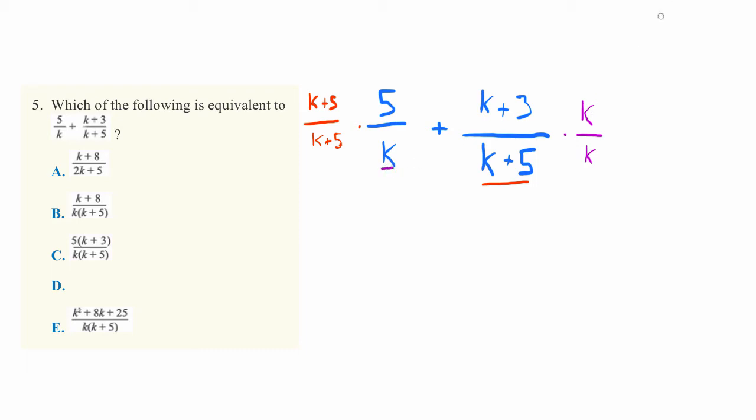And again, we need to remember that k over k, just like any number over itself, is equal to 1. And 1 times a number isn't changing it. So we're really not changing anything. We're just changing the way these equations look.